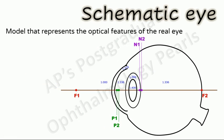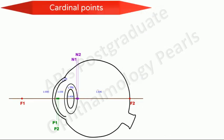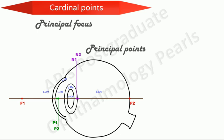A schematic eye is a model that represents the basic optical features of the real eye. In order to study the schematic eye, it is necessary to understand the concept of the cardinal points of an optic system. We will discuss these cardinal points with respect to refraction of spherical lenses. The cardinal points we need to understand are principal focus, principal points, and nodal points.